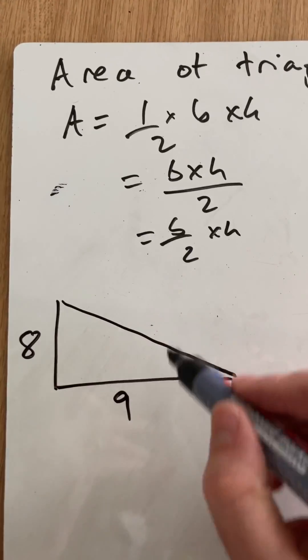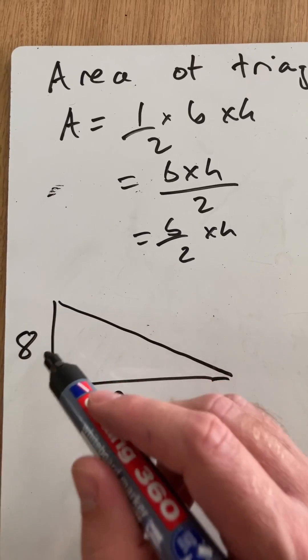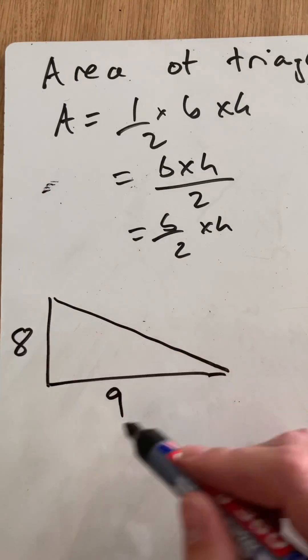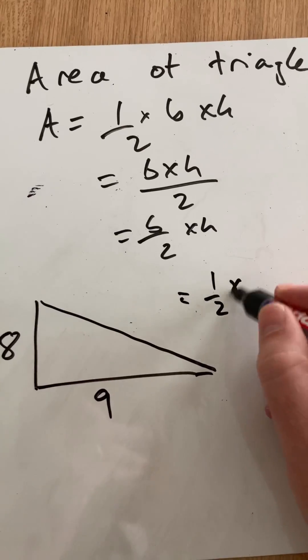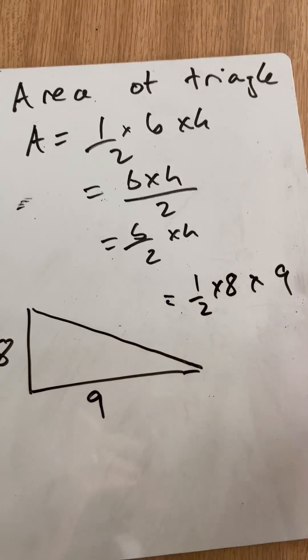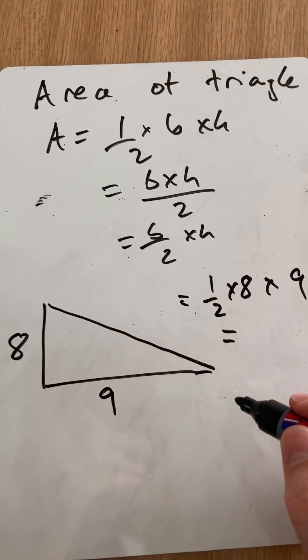The example I did in the other short was that I did half of 8 times 9. But if that sum is quite big, it's much easier actually to do half of 8 and then times that by 9, because the numbers will stay smaller.